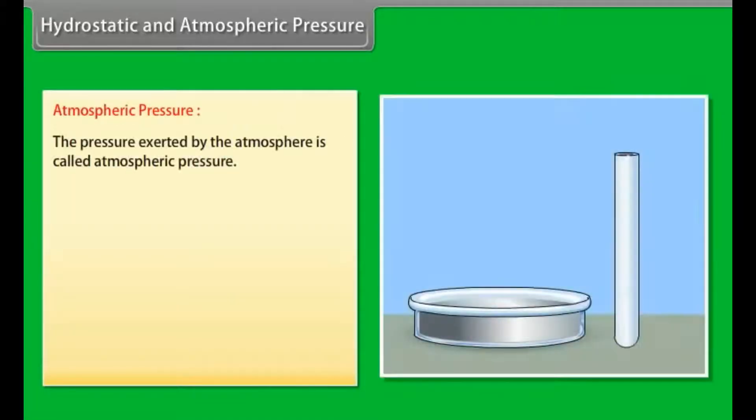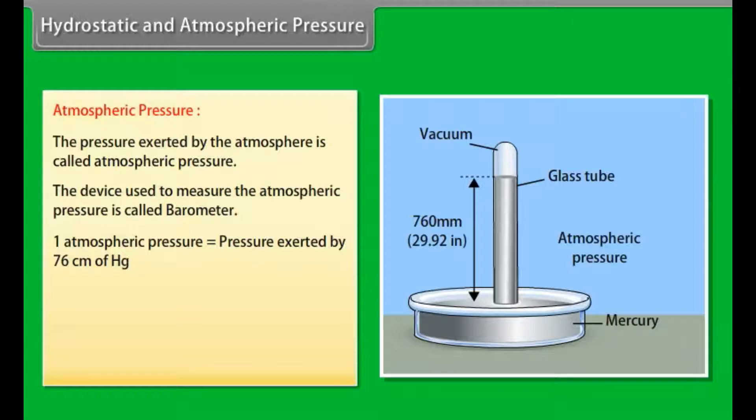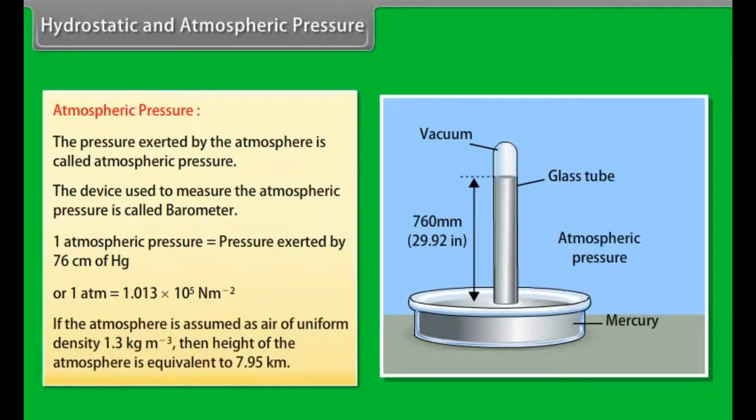Atmospheric pressure. The pressure exerted by the atmosphere is called atmospheric pressure. The device used to measure atmospheric pressure is called barometer. One atmospheric pressure is equal to pressure exerted by 76 cm of mercury, or 1 atm = 1.013 × 10^5 N/m². If the atmosphere is assumed as air of uniform density 1.3 kg/m³, then height of the atmosphere is equivalent to 7.95 km.